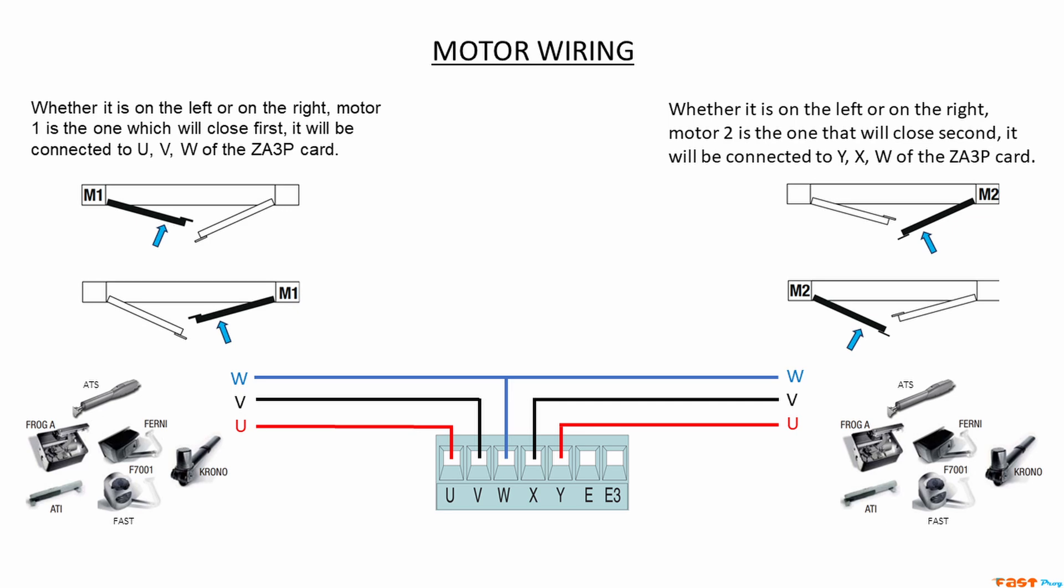For example, if the motor connected to UVW starts to close, just swap U and V. Same goes for the motor on WXY, just swap X and Y.